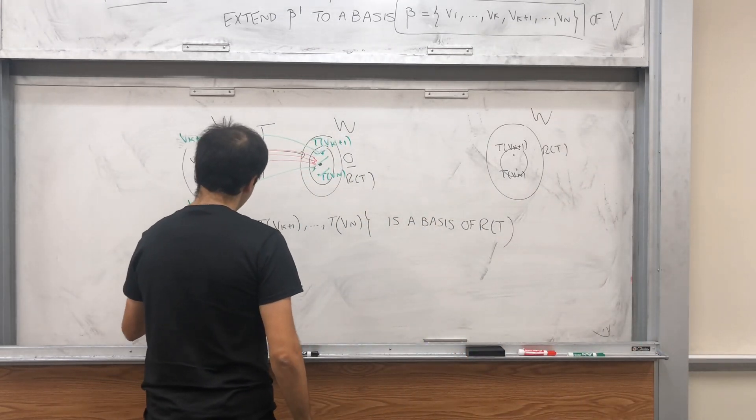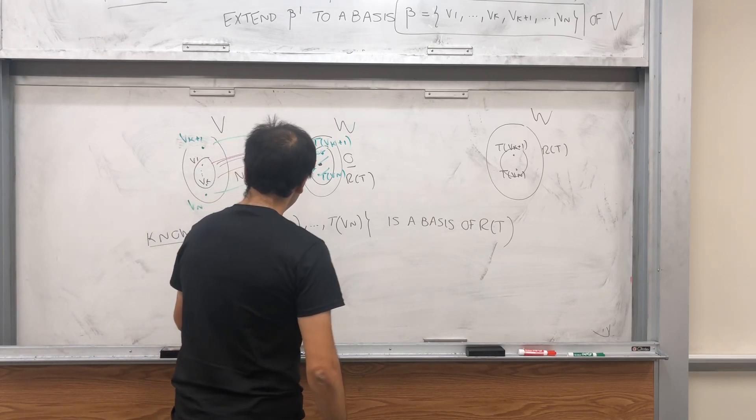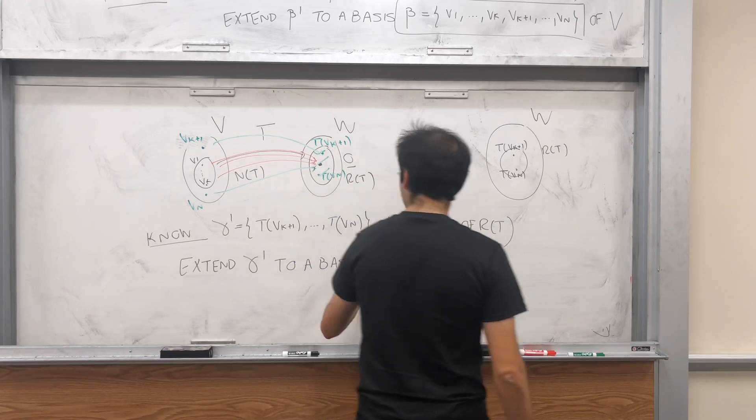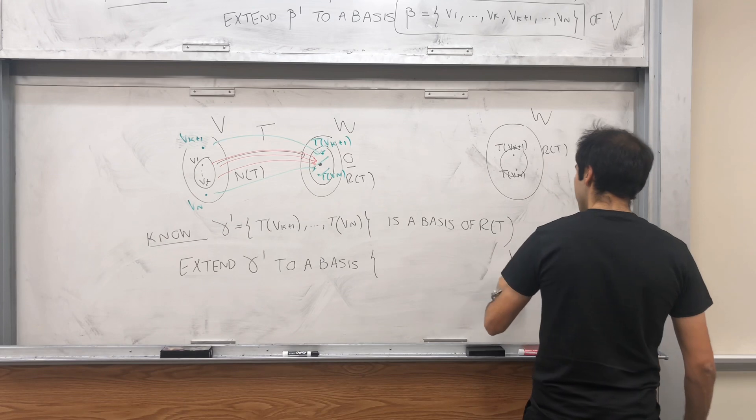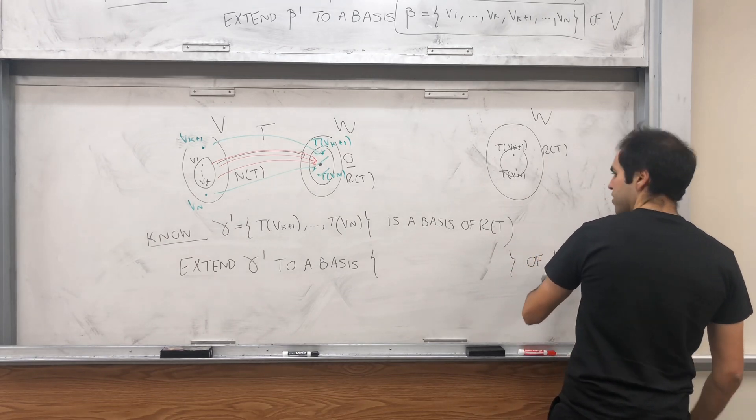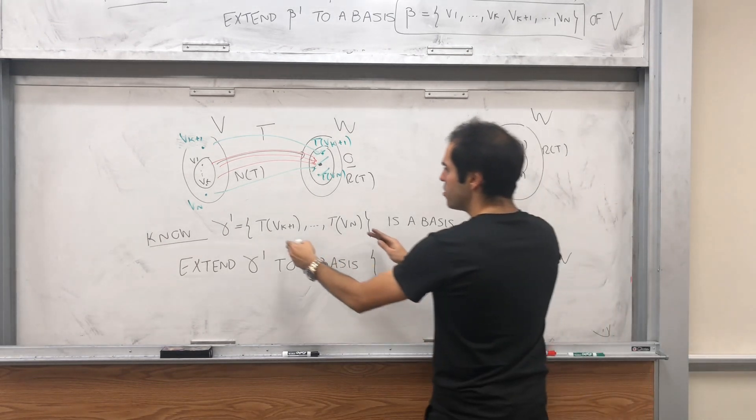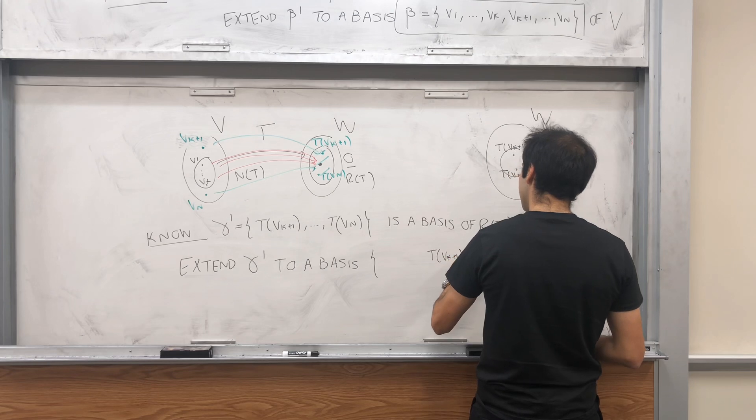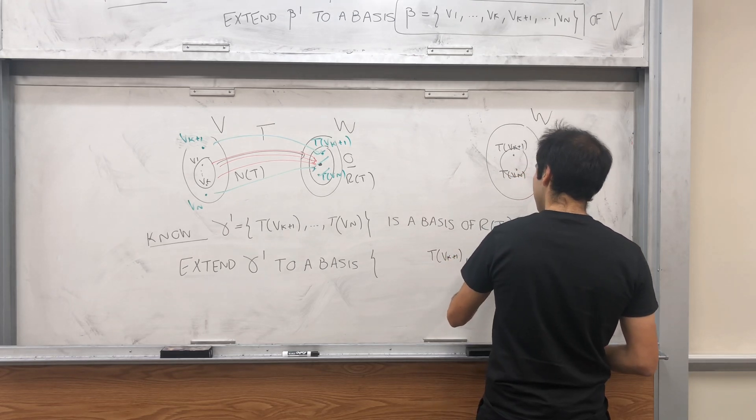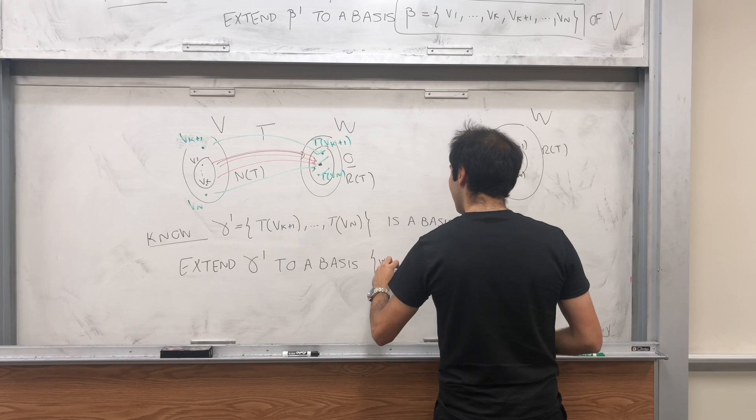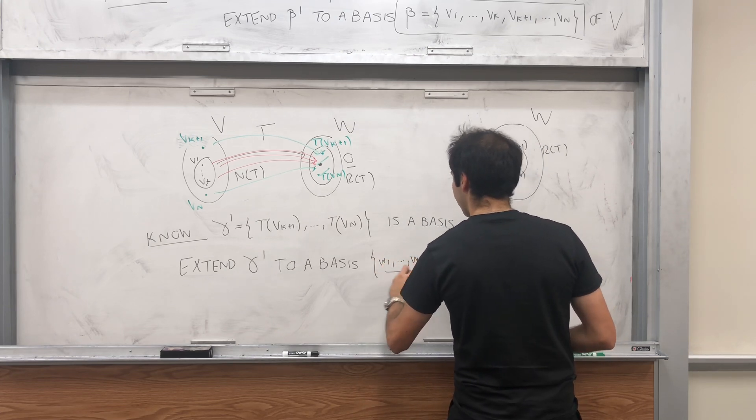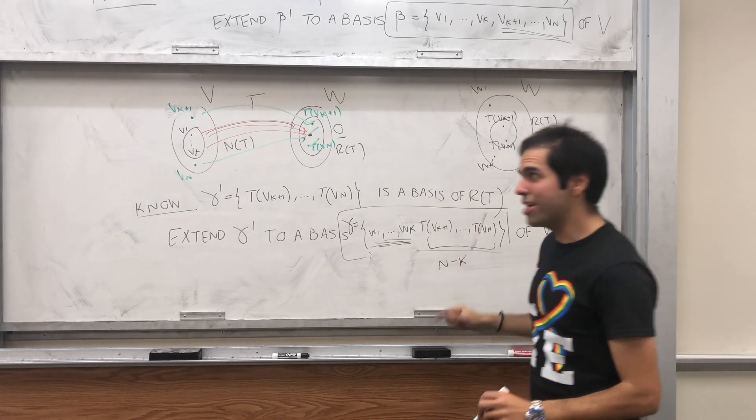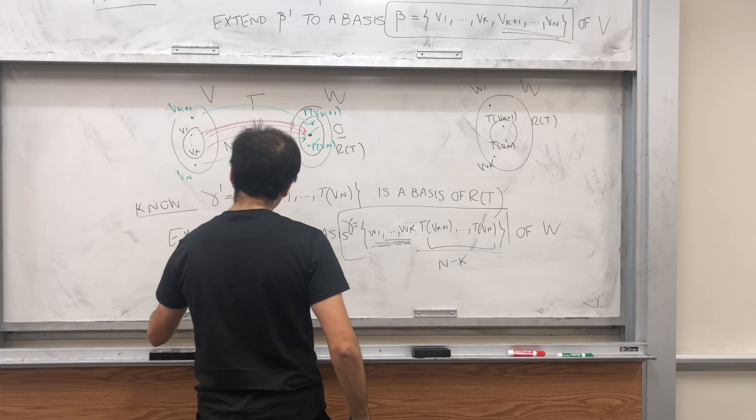So extend gamma prime to a basis, let's call it gamma, of W. So let's do it, and you'll see why we need this. So that the last few vectors correspond to precisely those, tvk plus 1 up to tvn. And let's call the first few vectors w1 up to wk. I forgot to mention. So we do need dimension of V to be dimension of W. Sorry about that.